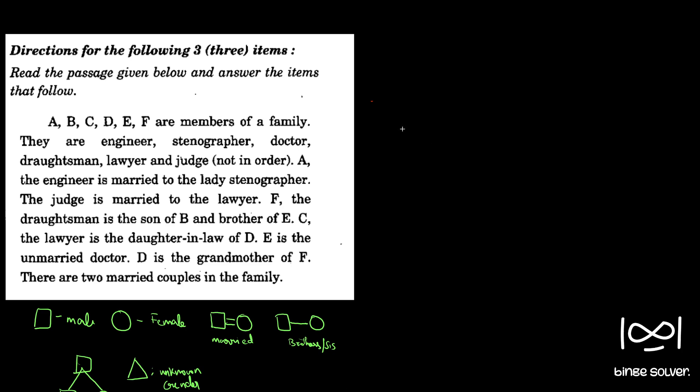The information starts from here. A, the engineer is married to the lady stenographer. So we know that A is male. A married to Steno. We don't know who that is yet.